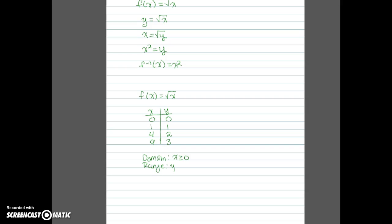Because of that, the range is also y values greater than or equal to 0. To form the inverse, we just switch the ordered pairs: (0,0), (1,1), (2,4), and (3,9). Notice that because this function came from the inverse, we are only using non-negative x values, so the domain is x greater than or equal to 0, and the range is also y greater than or equal to 0.